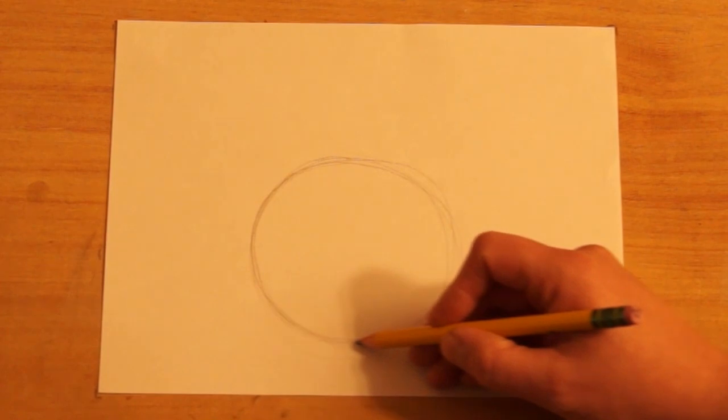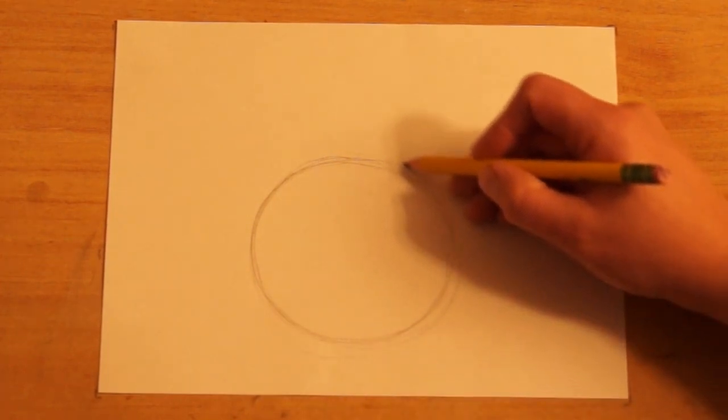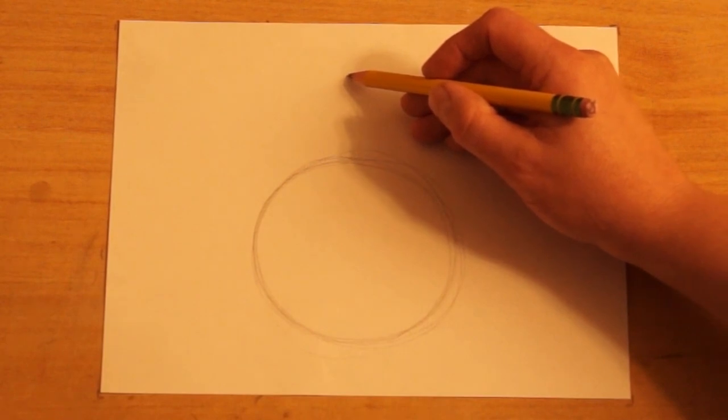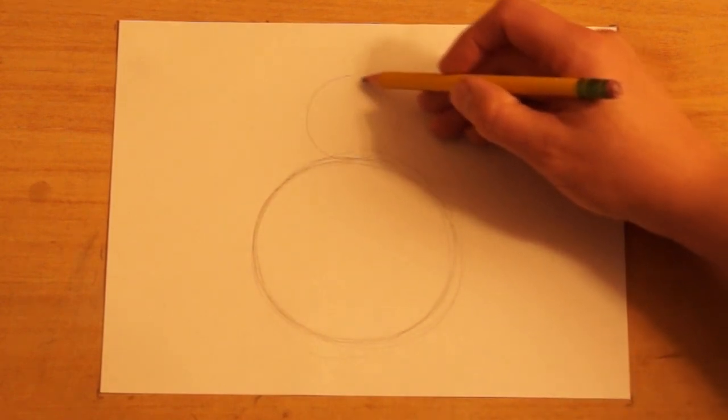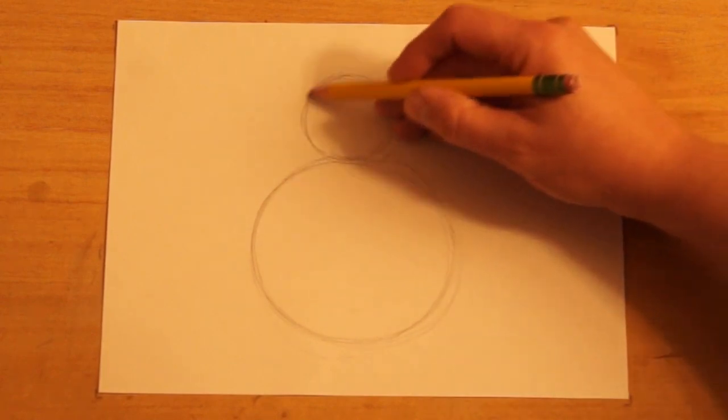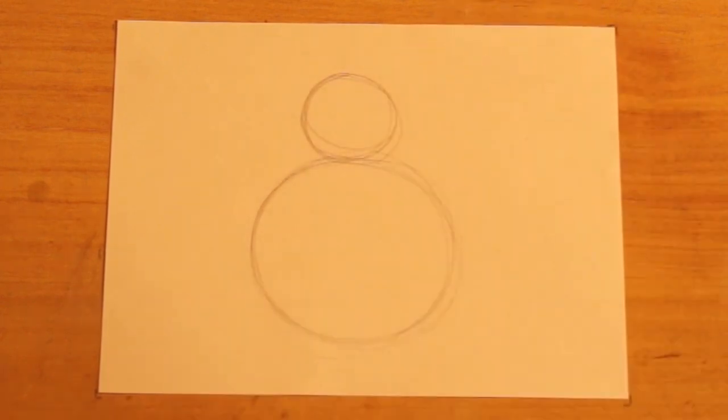I'm starting off kind of light because I'm going to change things as we go and I may need to erase some. Okay, sitting on top of that is another circle. And it's probably just a little bit bigger than a golf ball. Okay, so that's for the head.